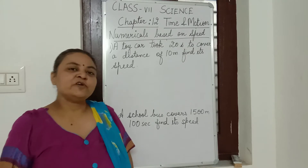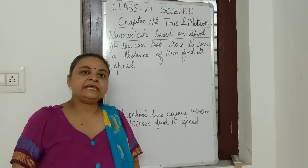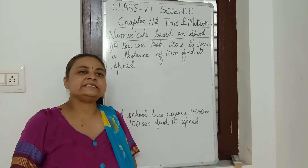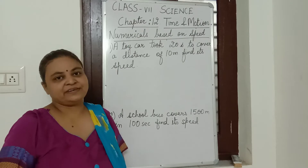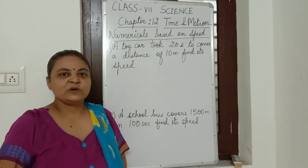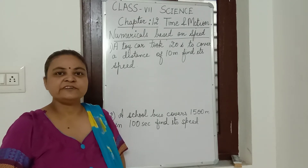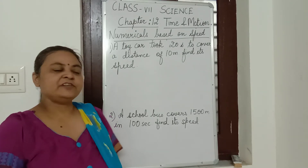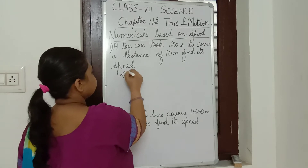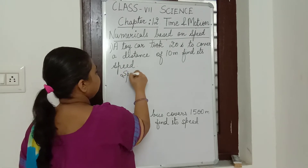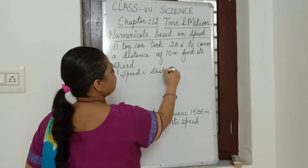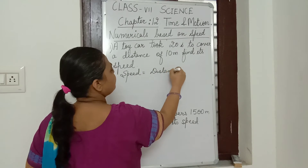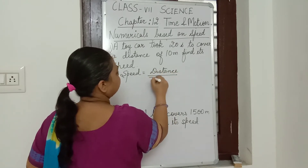Speed, as we have already defined, is the distance travelled by an object in unit time. So the formula for speed will be: speed is equal to distance divided by time.